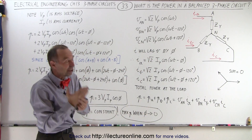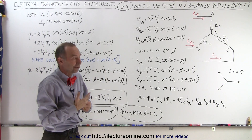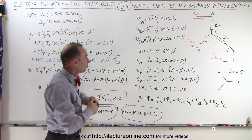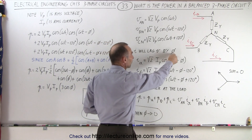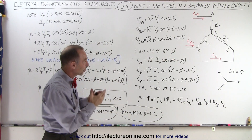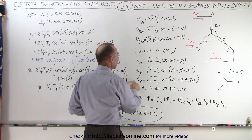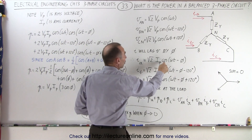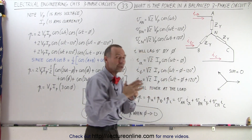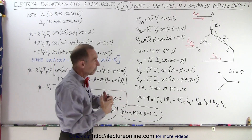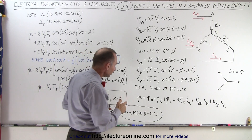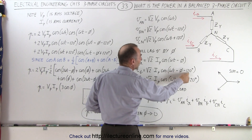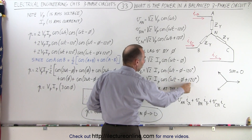There will be a phase difference between the current and the voltage. For an inductive load, the current will lag the voltage by some phase angle phi. We can now identify Ia, Ib, and Ic in terms of the phase current — again multiplied by the square root of two since the phase current is the RMS current — times the cosine of omega t minus phi. Ib and Ic will differ by 120 degrees: cosine of omega t minus phi minus 120, and omega t minus phi plus 120 for the other two currents.